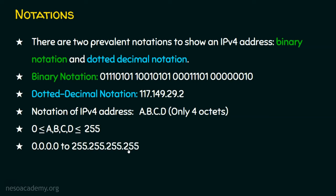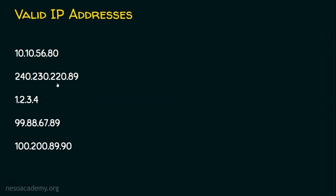We have various classes of IP address, and we have private IP addresses, public IP addresses, and loopback addresses — we will be covering all these topics in the coming lectures. For valid IP addresses, the addresses shown are valid because they have exactly 4 octets and the values in all the octets are between 0 and 255. For now, we will understand that a valid IP address must have only 4 octets, and in every octet the value should be between 0 and 255.